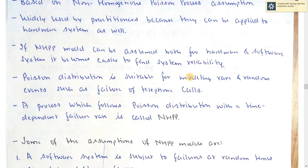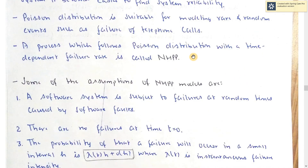The NHPP model can be assumed both for hardware and software. Poisson distribution is suitable for modeling rare and random events such as failure or telephone calls. It also finds out the time of telephone calls, the time of failure. A process which follows Poisson distribution with a time-dependent failure rate is called NHPP — Non-Homogeneous Poisson Process.